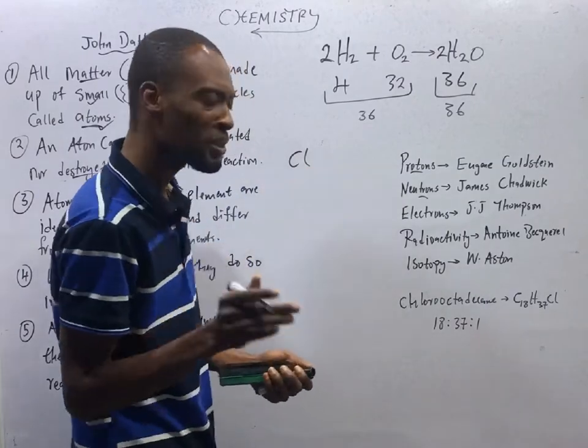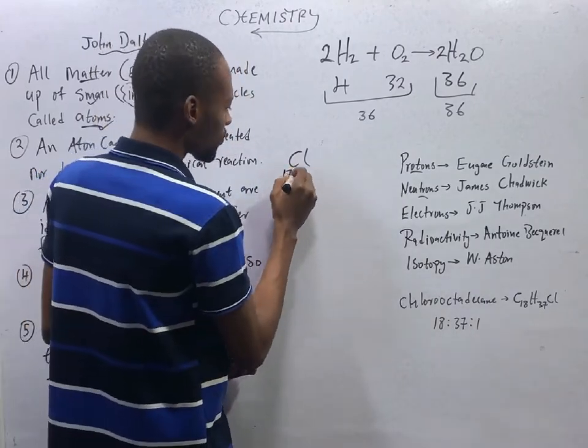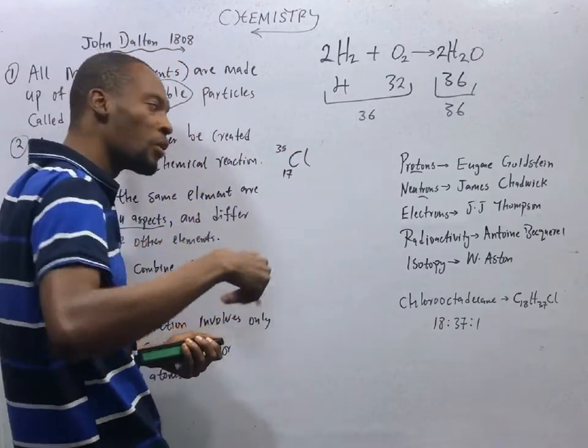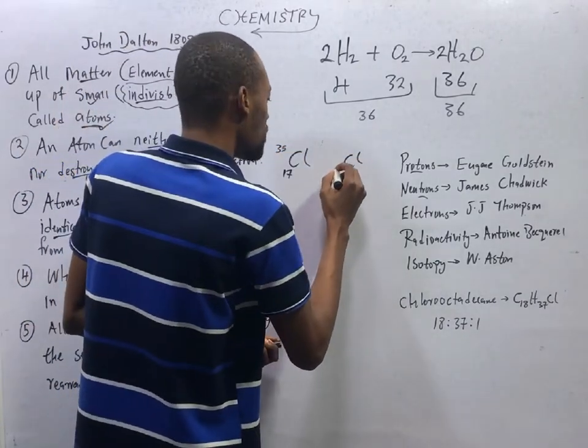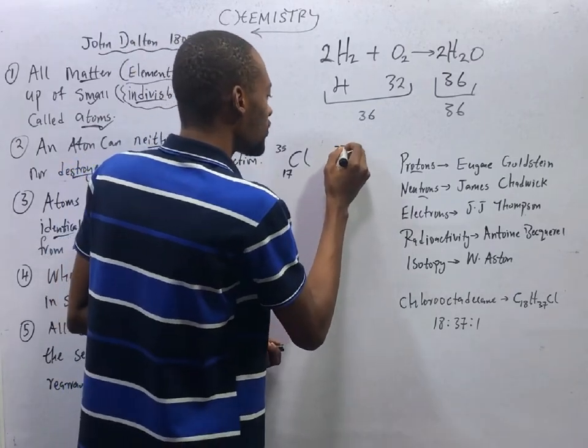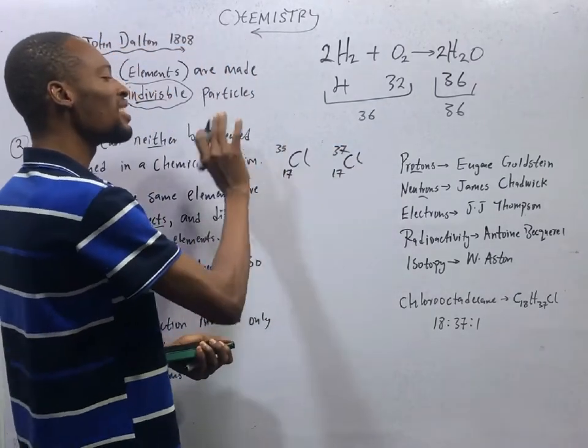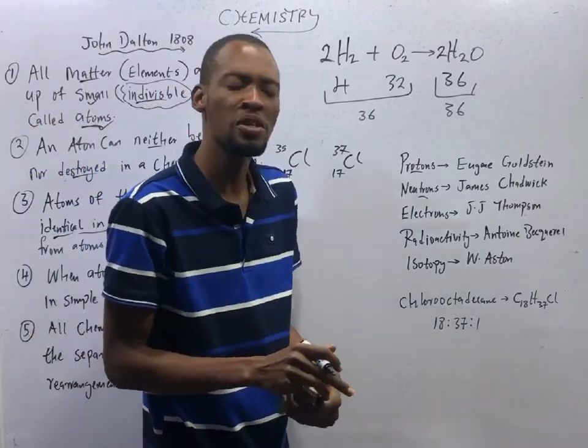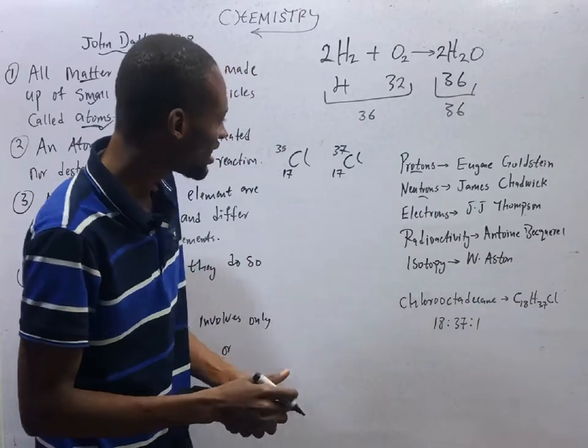You can have the same chlorine with atomic number of 17, mass number of 37. So atoms of the same elements, they are having different masses, different behavior. So atoms of the same elements are not exactly alike.